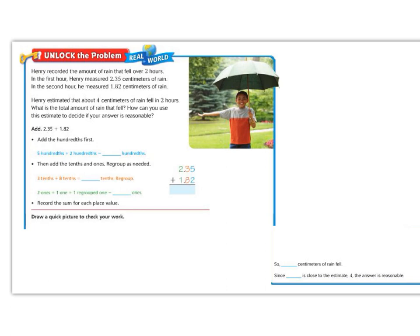Let's begin by reading the Unlock the Problem. Henry recorded the amount of rain that fell over two hours. In the first hour, Henry measured 2.35 centimeters of rain. In the second hour, he measured 1.82 centimeters of rain. Henry estimated that about 4 centimeters of rain fell in the two hours. What is the total amount of rain that fell? How can you use estimation to decide if your answer is reasonable?